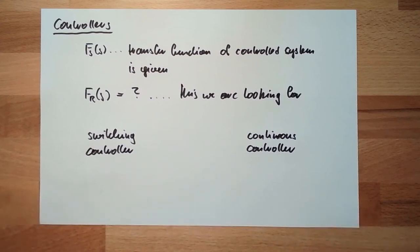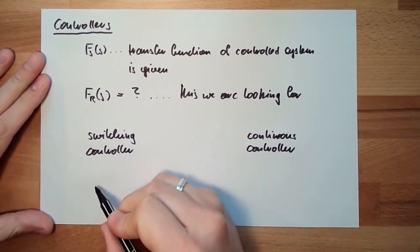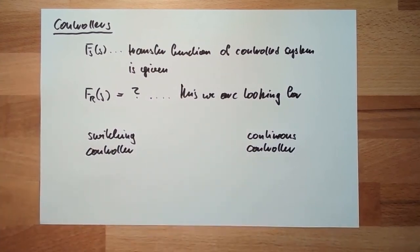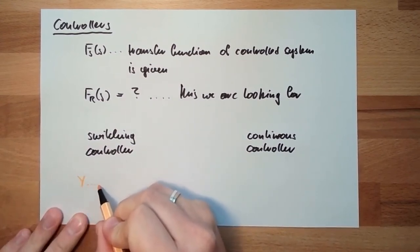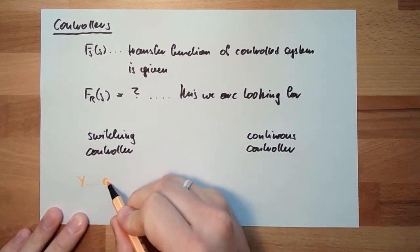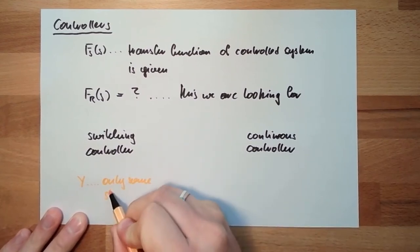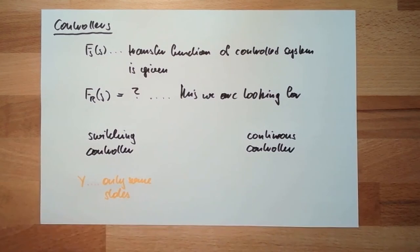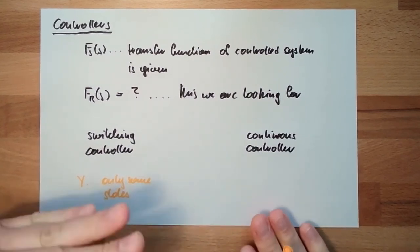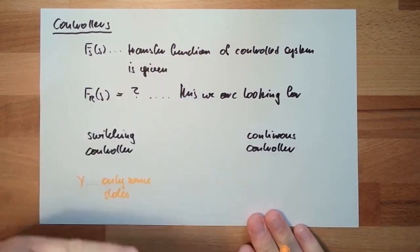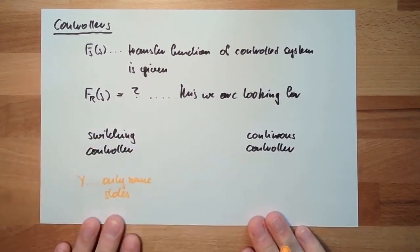Switching controllers, just for remembering, there the y is only some states. So the correcting variable only has some states. Some are two-point controllers, off and on. Some are three-point controllers. We will discuss this in the next video.